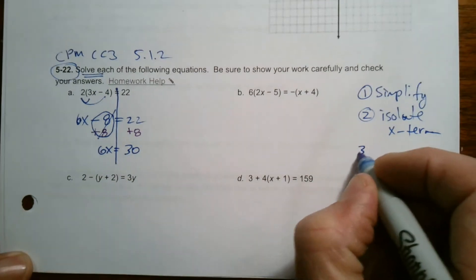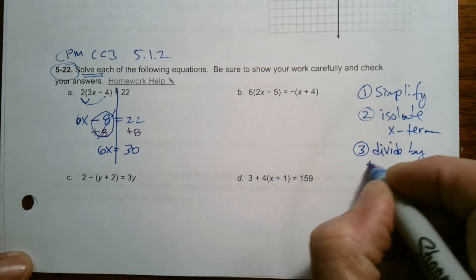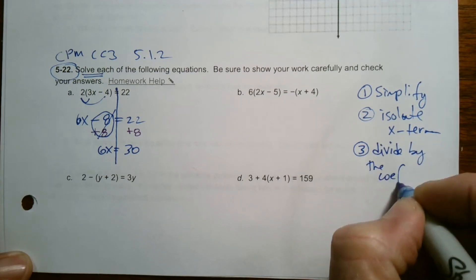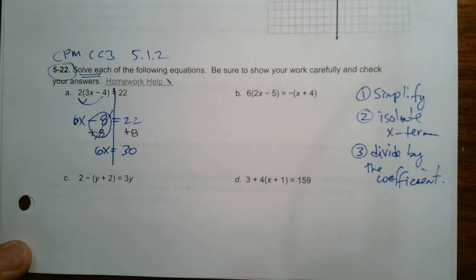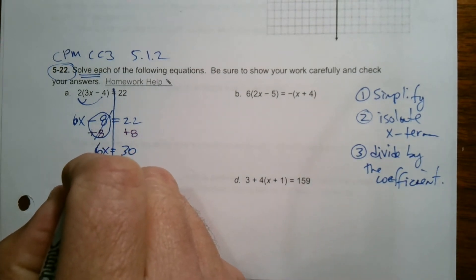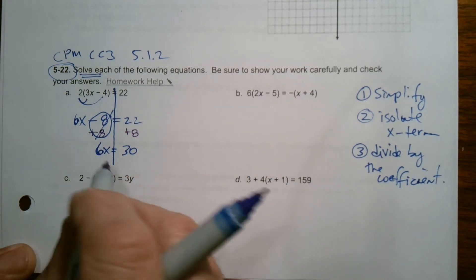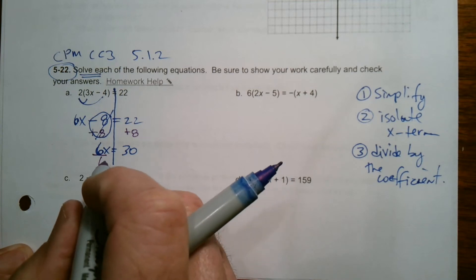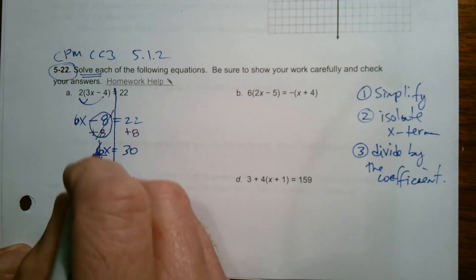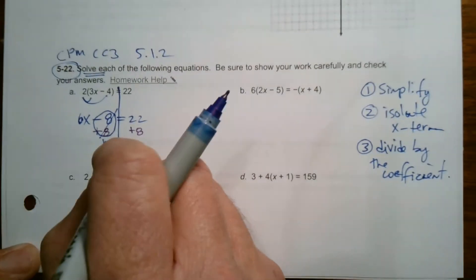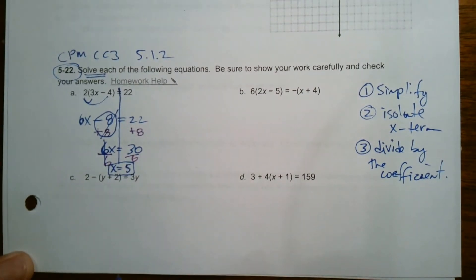My last step is always to divide by the coefficient. The coefficient, remember, that term means the number that's in front of the variable, the number that's being multiplied to the variable. In this case, six is being multiplied to the variable so I do the opposite, which is division. Because the reason why I'm dividing is I want my X, I want a single X. Six divided by six is one, it's a single X. So what do I do to one side I do the other. 30 divided by six is five. So there's what I think is the answer, X equals five.